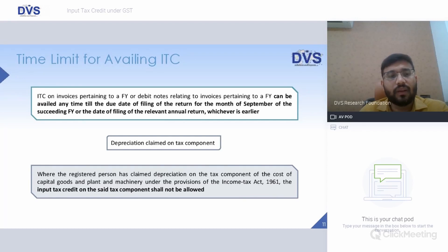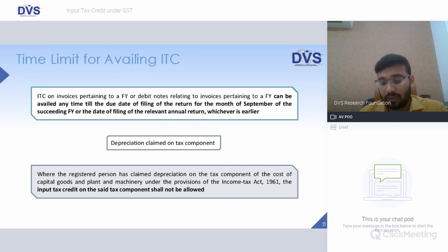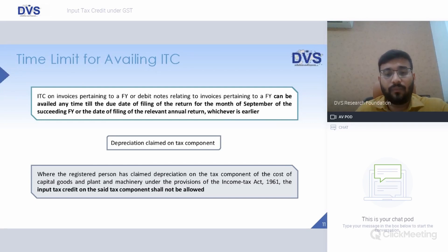Time limit for availing ITC: it is up to the due date of filing the return for September of the succeeding financial year, or the date of filing the annual return, whichever is earlier. If depreciation has been claimed — say machinery worth Rs. 1,18,000 where the entire amount including Rs. 18,000 GST is capitalized and depreciation is charged on the full value — then the Rs. 18,000 credit would not be available. Either depreciation or ITC can be availed, not both simultaneously.